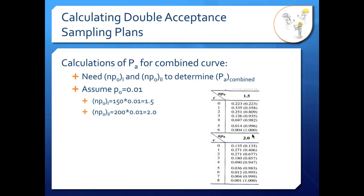Starting with the probability of acceptance for our first sample: C1 is 1, and under NP0 = 1.5 we look up the cumulative value — because we can have one or fewer — and we get 0.558. We'll put a star by that because it's a point that will show up on our OC curve. Now we need to work on the second curve, but we hold on to this number because it's one of the three terms in our combined probability of acceptance equation.